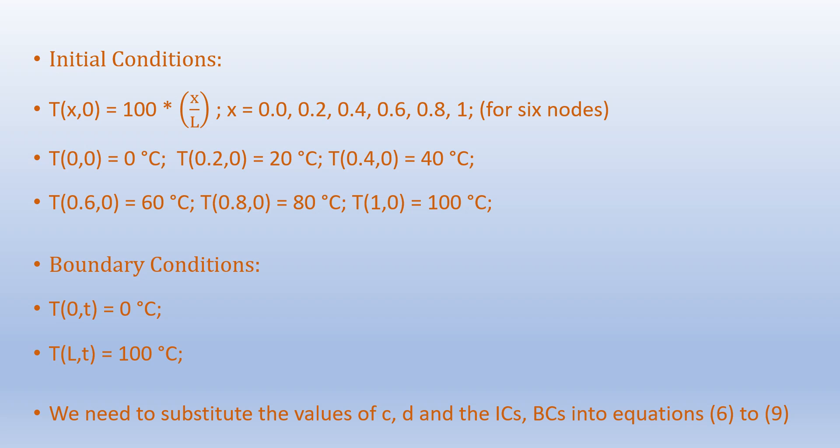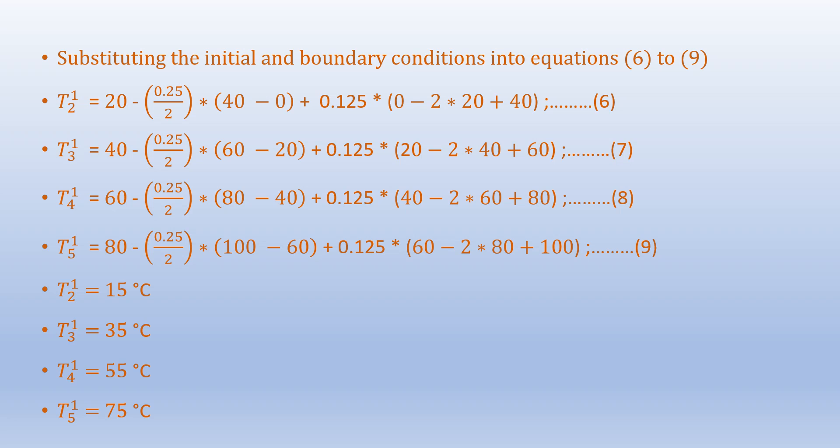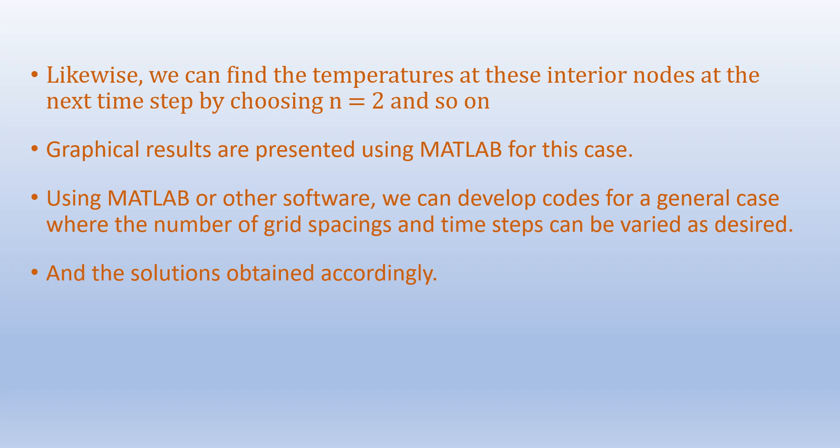The initial conditions are given for all six nodes and we also know the boundary conditions at the two ends. Substituting the values of C, D, the initial conditions, and boundary conditions into equations 6 through 9, we evaluate the temperatures at interior nodes 2 to 5 for the first time step. The results are T2¹ equals 15°C, T3¹ equals 35°C, T4¹ equals 55°C, and T5¹ equals 75°C. We can then repeat this for the next time step by setting n equals 2, and so on.